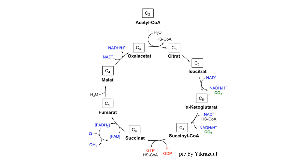Then it's dehydrogenase, gives NADH, carbon dioxide, and alpha-ketoglutarate. Waltz round the cycle, waltz round the cycle, waltz round the TCA cycle with me. Then it's dehydrogenase, gives NADH, carbon dioxide, and alpha-ketoglutarate.